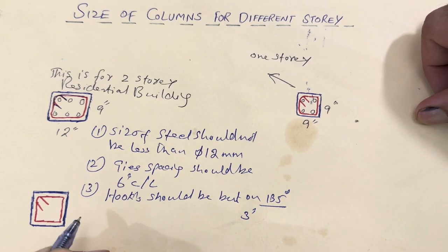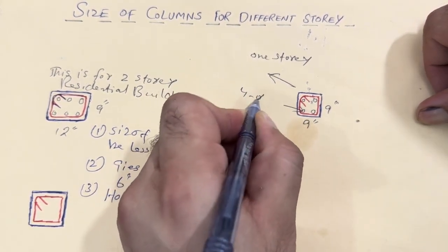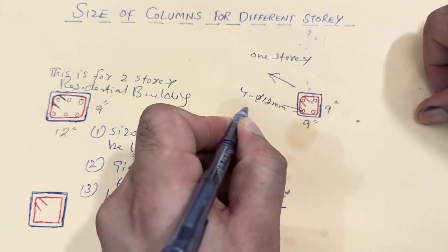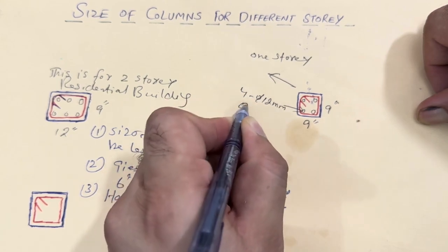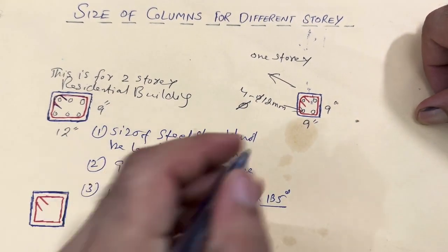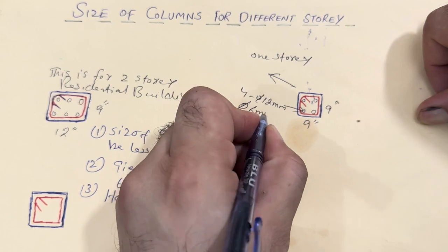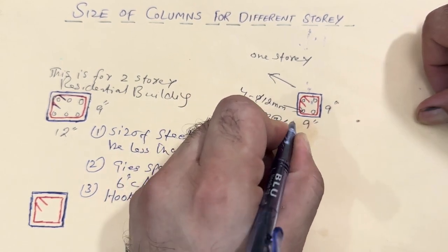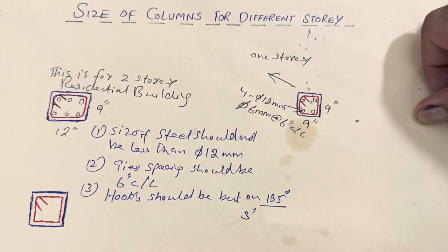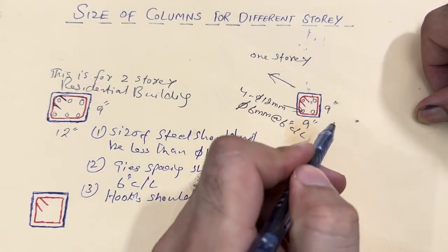You can see — 4 numbers and the diameter should be 12 mm. The tie diameter should be 6 mm with a spacing of 6 inches center to center. This is normally for a one storey building.